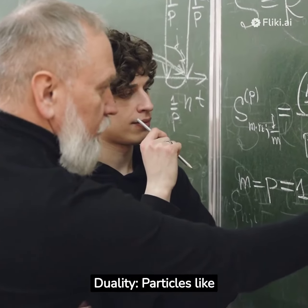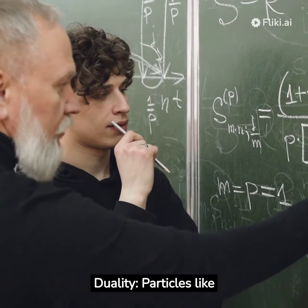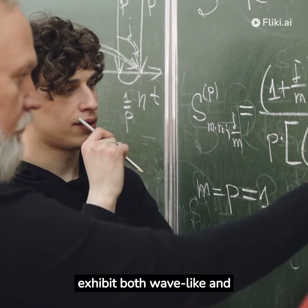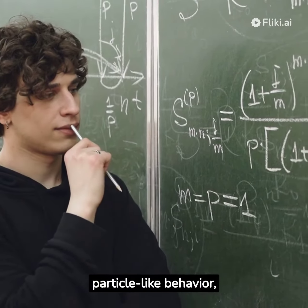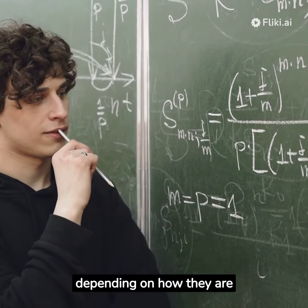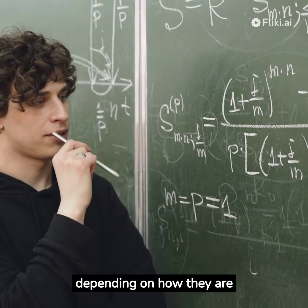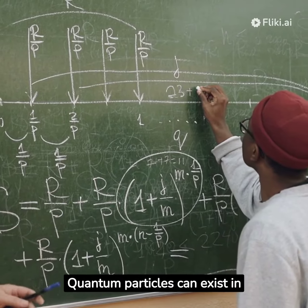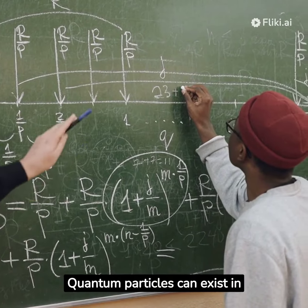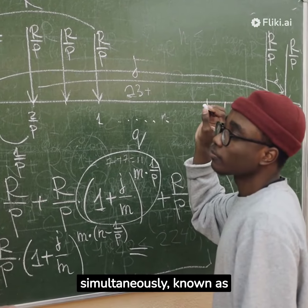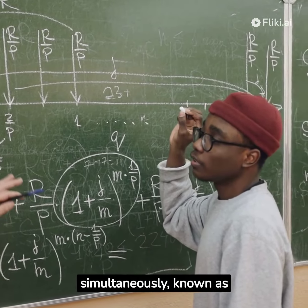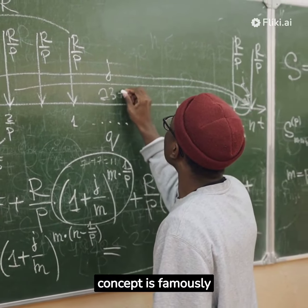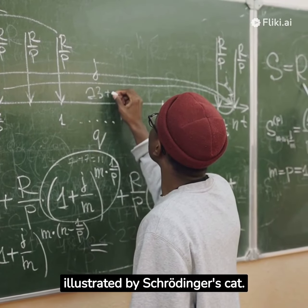Wave-Particle Duality. Particles like electrons and photons can exhibit both wave-like and particle-like behavior, depending on how they are observed. Superposition. Quantum particles can exist in multiple states simultaneously, known as superposition. This concept is famously illustrated by Schrödinger's cat.